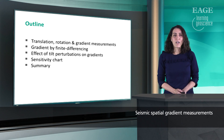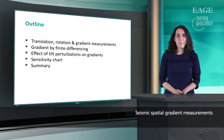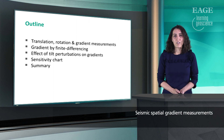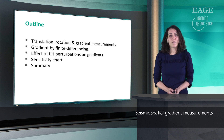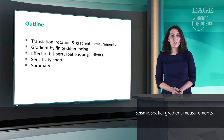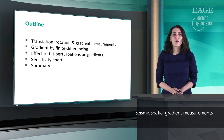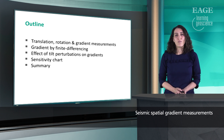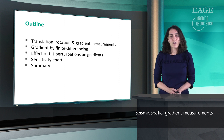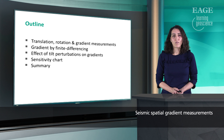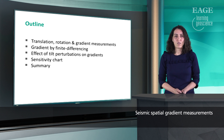I'll start by discussing the basics of translation, rotation, and gradient measurement. Then I'll continue to discuss how we can obtain gradient measurement by taking the difference from two conventional geophones and the challenges that come with it. We will discuss a few types of perturbation which have impact on the gradient, and then assess their impact and rank them into a sensitivity chart.